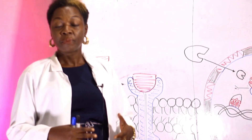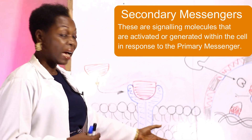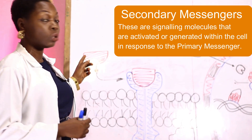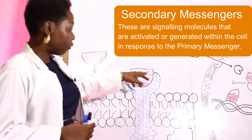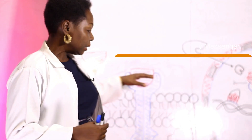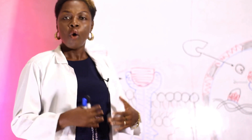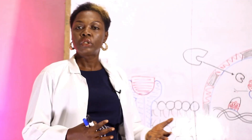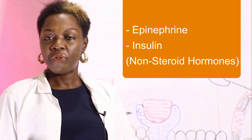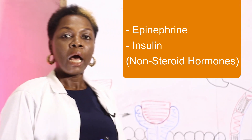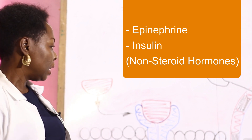What are secondary messengers? Secondary messengers are molecules that are activated in response to signals from the hormone-receptor complex formed outside the cell, and these signals cause a series of changes. Hormones that use the secondary messenger systems are epinephrine, insulin, or the non-steroid hormones.